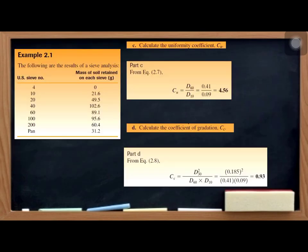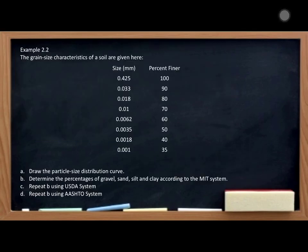For letter C, calculate the uniformity coefficient Cu = D60 / D10 = 0.41 / 0.09 = 4.56. For letter D, calculate the coefficient of gradation Cc = D30² / (D60 × D10). Substituting the values gives Cc = 0.92.